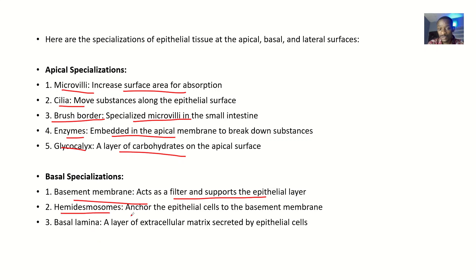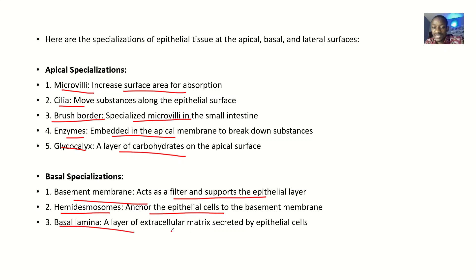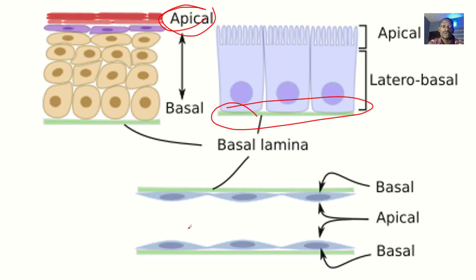Then we have hemidesmosomes — they anchor the epithelial cells to the basement membrane. Without them, the cell can be pushed away, so the hemidesmosomes anchor the cell in one place so it can absorb better. Then we have the basal lamina, which is a layer of extracellular matrix secreted by epithelial cells.